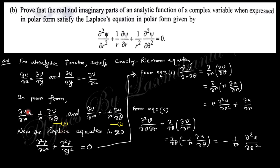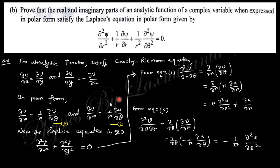Writing the Cauchy-Riemann equations directly in polar form with polar coordinates (r, θ): ∂u/∂r = (1/r)·∂v/∂θ and ∂v/∂r = −(1/r)·∂u/∂θ. The 2D Laplace equation is ∂²ψ/∂x² + ∂²ψ/∂y² = 0. Taking the partial derivative with respect to r gives ∂²v/(∂r ∂θ).